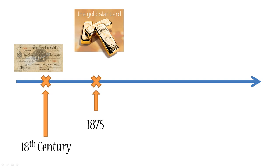For example, country A says that one unit of its currency equals two ounces of gold, and country B says that one unit of its currency equals four ounces of gold. That means you now know how to convert the currency of country A into the currency of country B. That made things simpler and defined certain rules around how transactions occurred. The gold standard became the first standardized means of exchange in history.